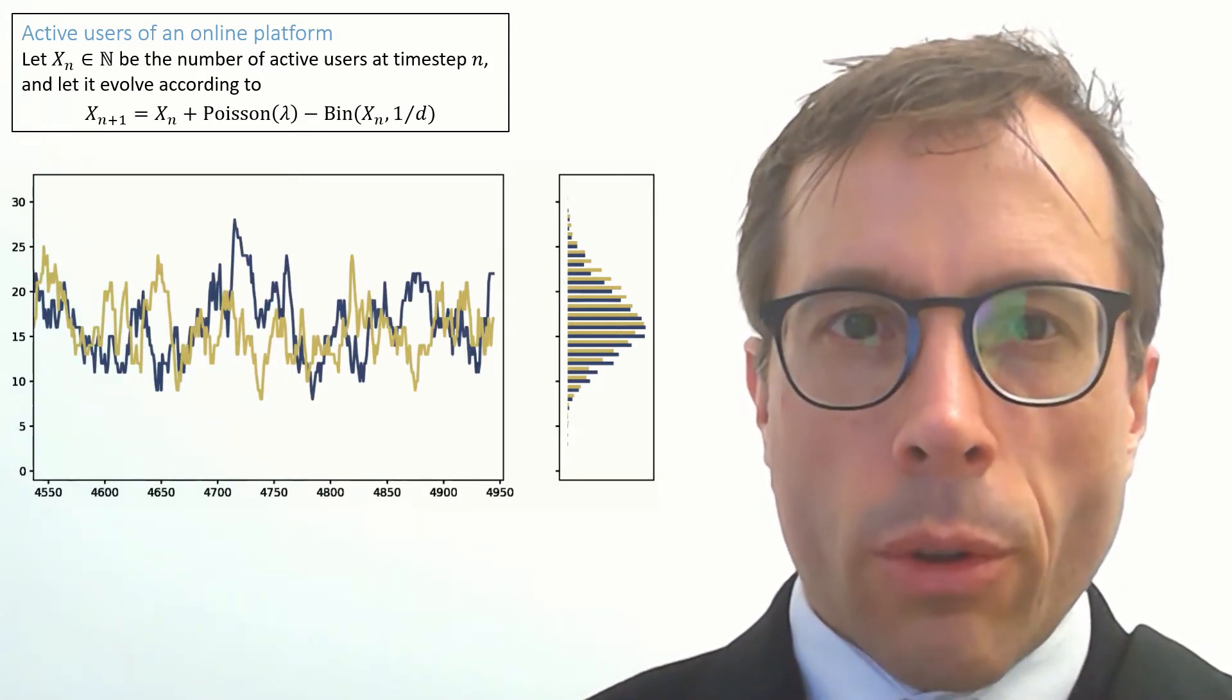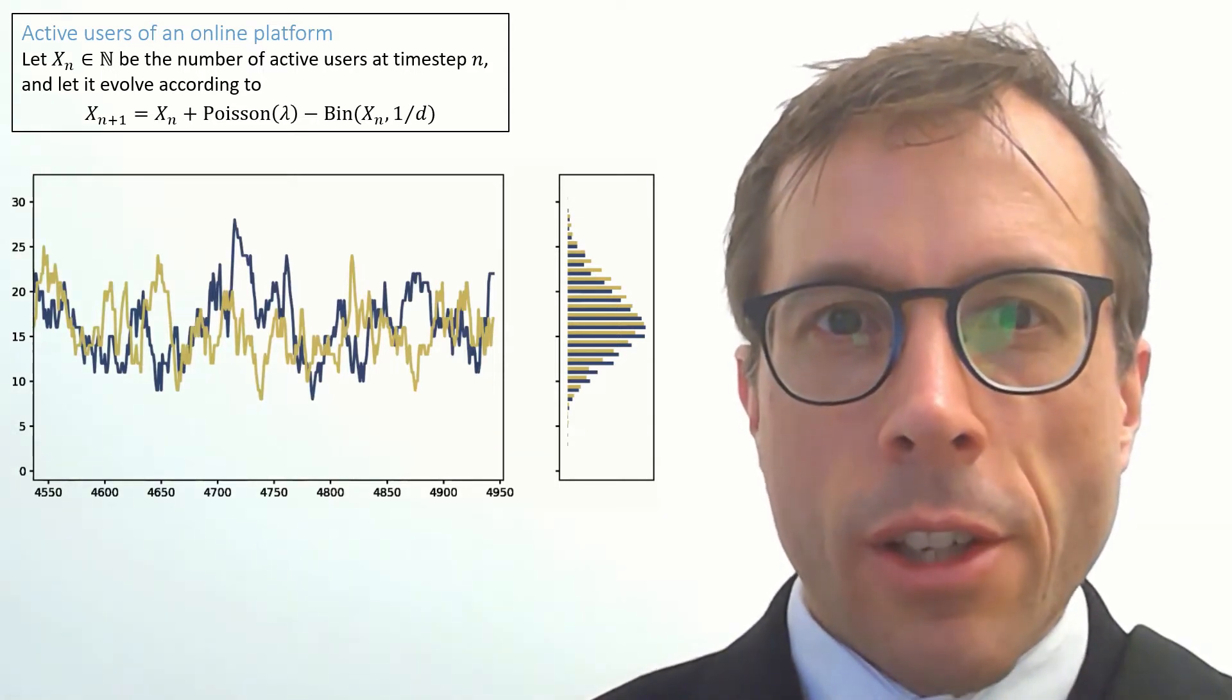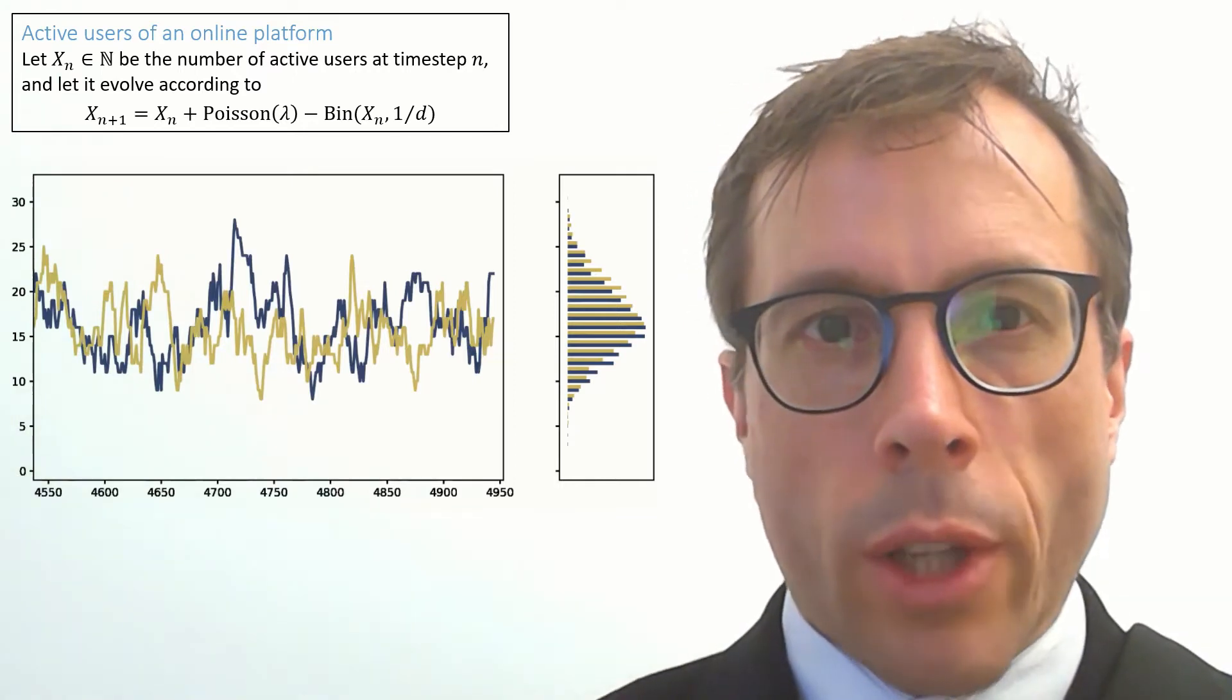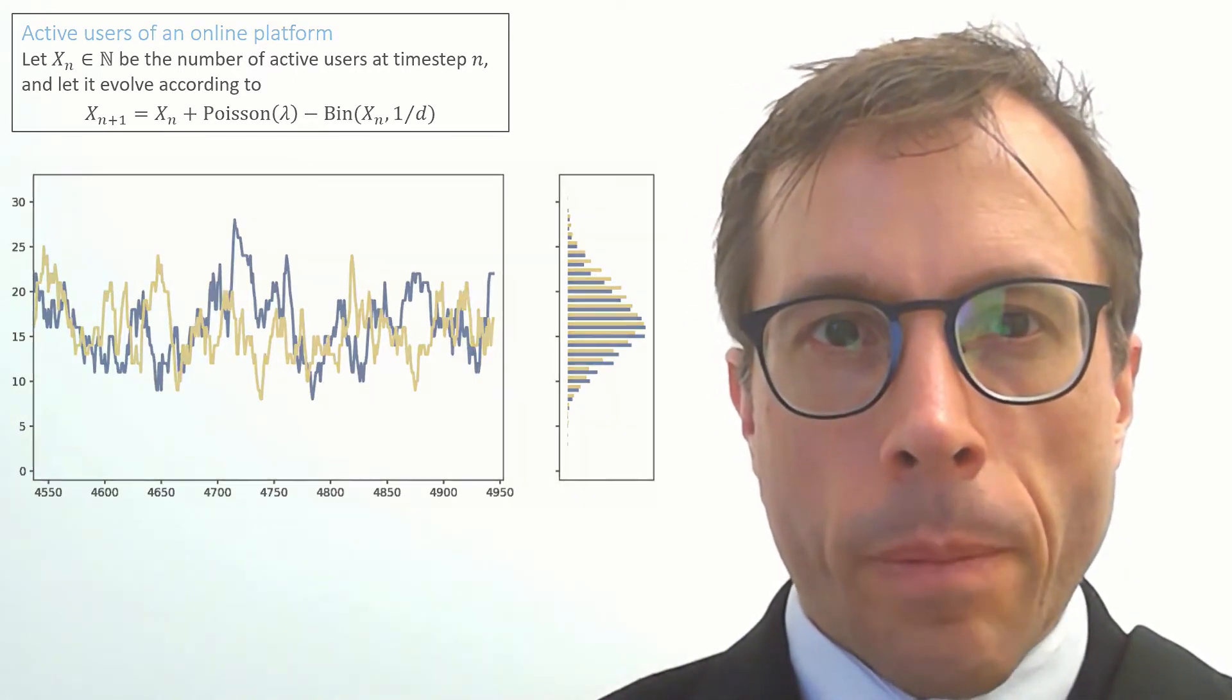In this active users model, it could tell us, for example, the 99th percentile of load that our online platform will experience. Or if we had a Markov model for an endemic disease, we could learn, for example, the average prevalence and also the likely load on the health service when the disease flares up.